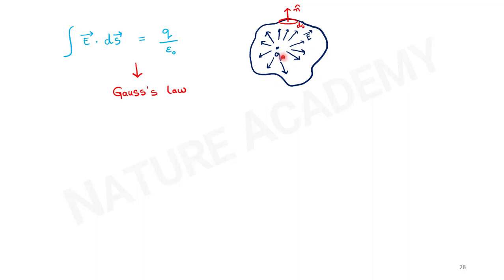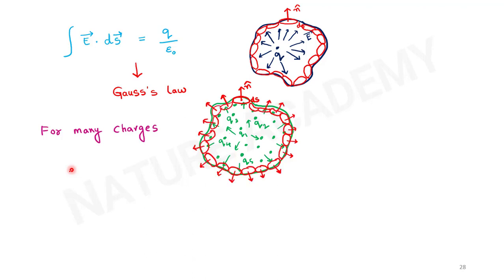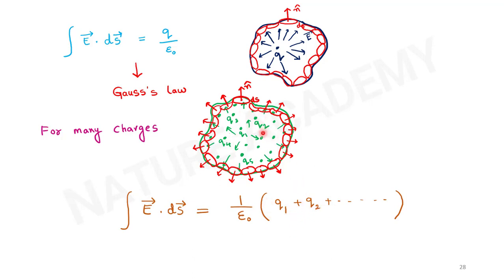If we have many charges inside the closed surface, the flux can be written as the integral of E-bar dot dS-bar equals 1 over epsilon-naught times the summation of all charges inside the closed surface. This generalizes Gauss's law to multiple enclosed charges.